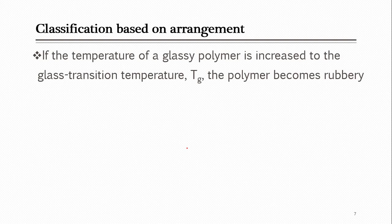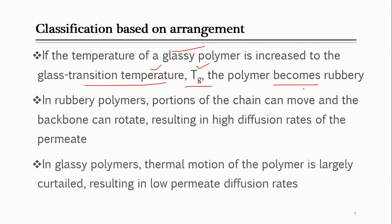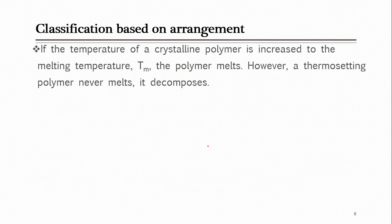For amorphous polymers, they are named either glassy or rubbery polymer. There is one temperature called the glass transition temperature (Tg). If an amorphous polymer exists at a temperature less than Tg, it is called a glassy polymer. If you raise its temperature above Tg, the polymer becomes rubbery. When rubbery, polymer chains can move and allow more diffusion of the permeate, while in glassy polymers the chains are more packed and denser, so diffusion is lower.